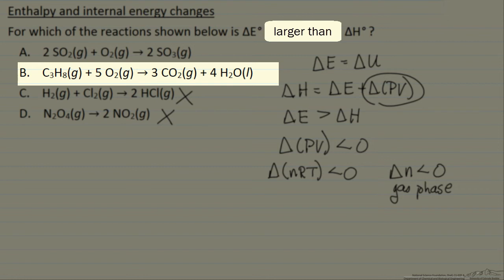For B, we have six moles of gas on the left side and three moles of gas on the right side because this is a liquid. So this is one of the reactions where delta N is less than zero.